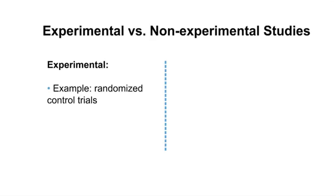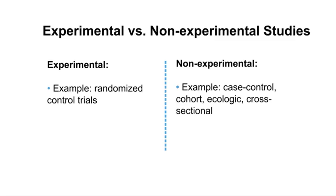Examples of experimental study types include randomized control trials, which we will be discussing in greater detail in this video. Examples of some non-experimental or observational study designs are case control, cohort, ecologic, and cross-sectional studies. You will learn more about these designs in other segments in this MOOC.